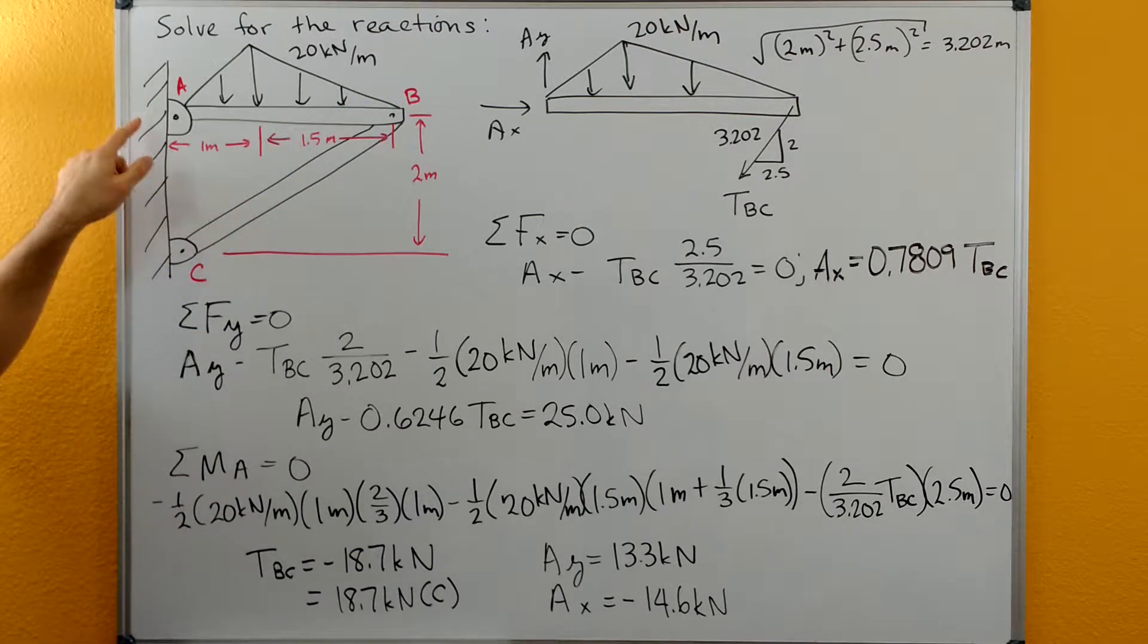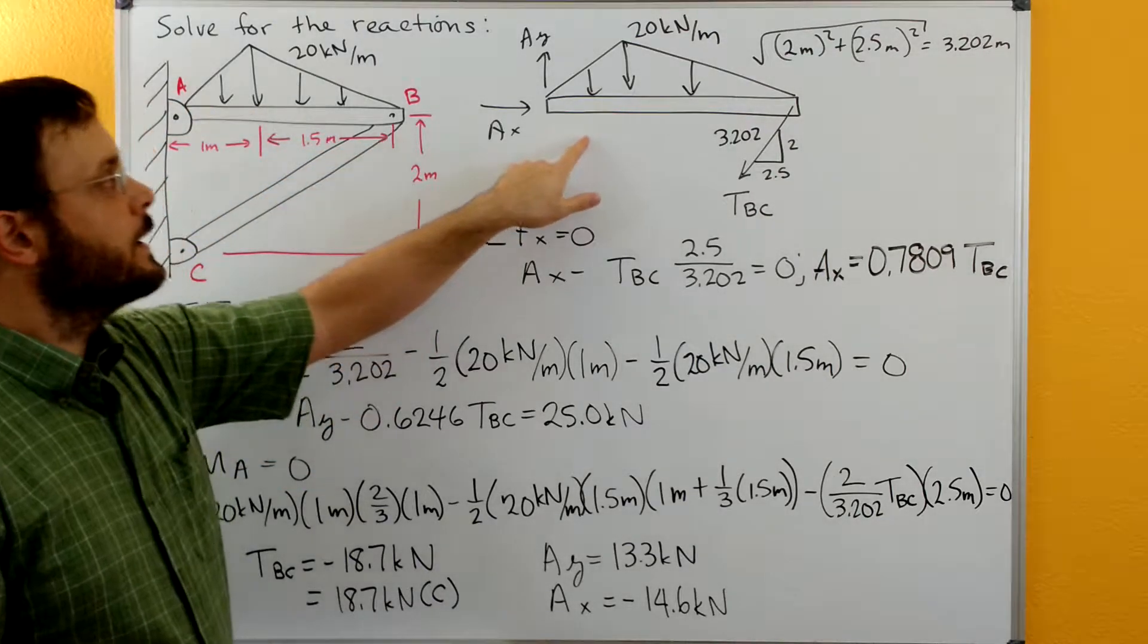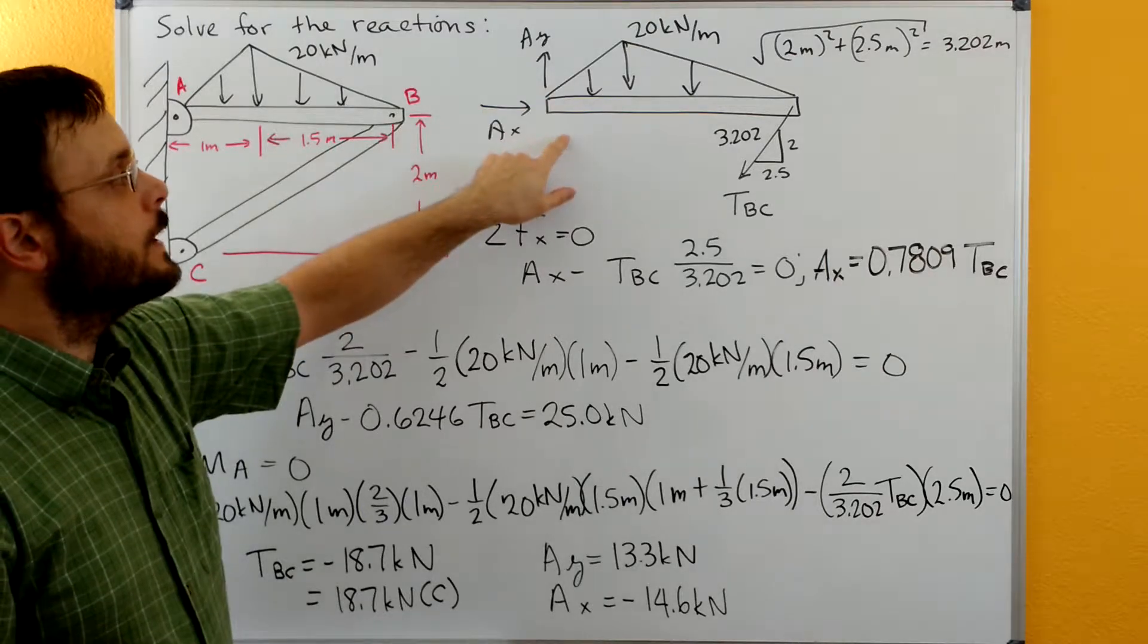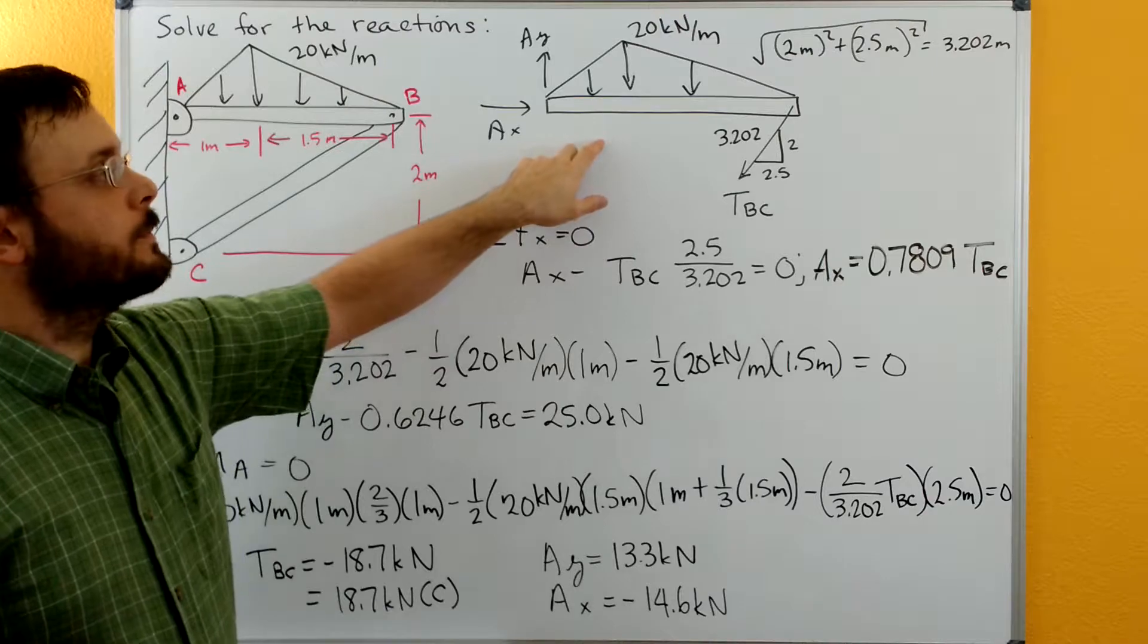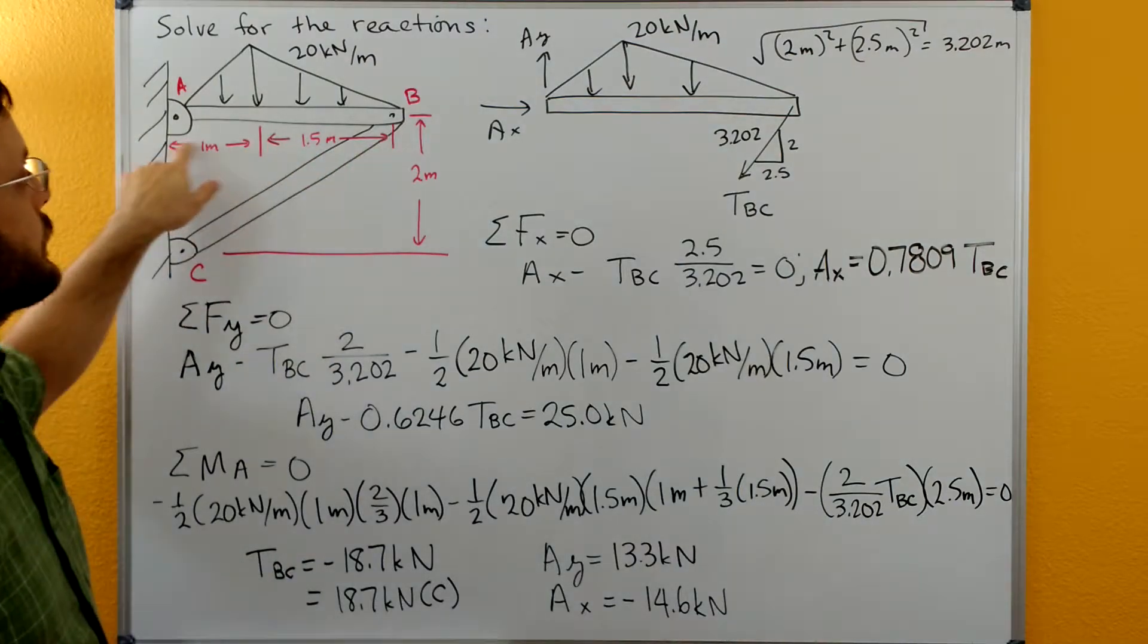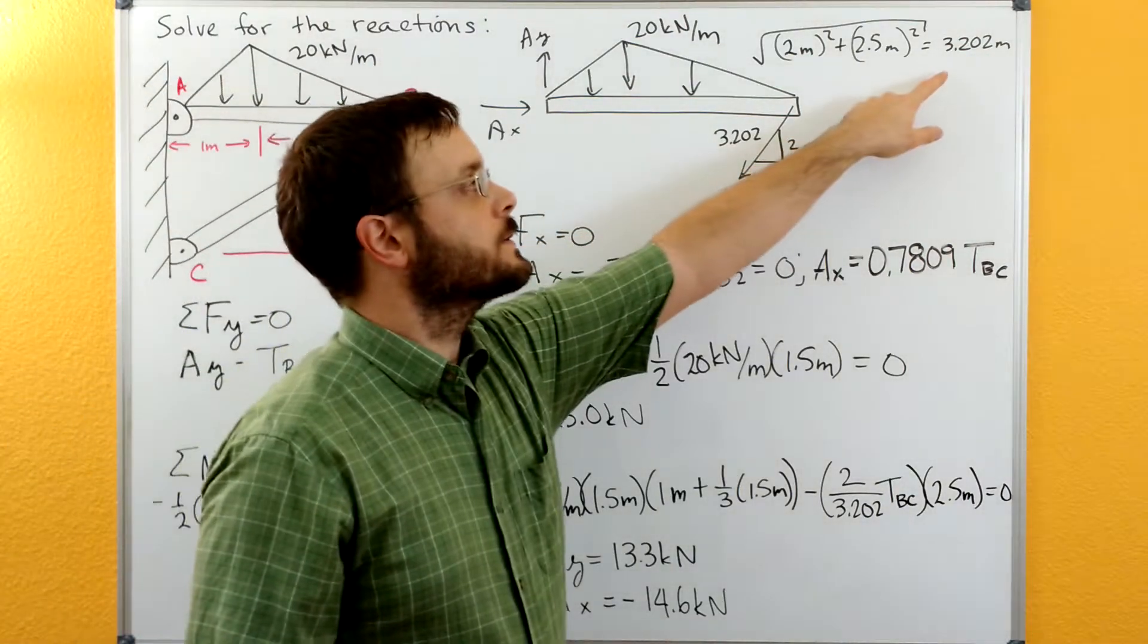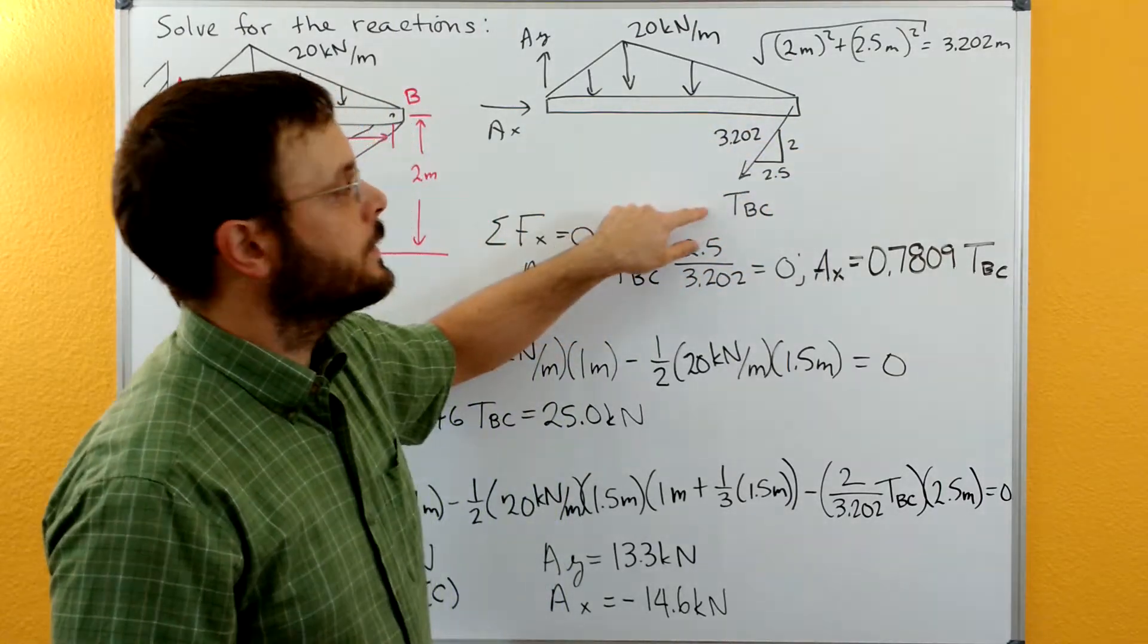So I need to solve for the reactions at A and B so let's draw our free body diagram. So for our pin at A we have an AX and an AY, we have our distributed load the 20 kilonewton per meter, and then just calculating the hypotenuse of the distance triangle here, the 2.5 meters by the 2 meters, we find that that's 3.202 and so we draw that triangle here on TBC.